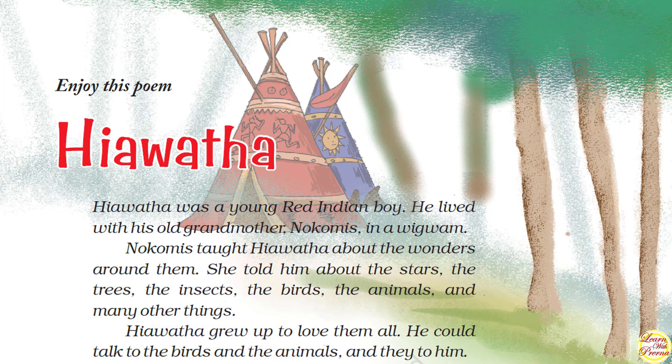As you can also see in this picture, some dome-shaped or conical-shaped tents are here which are made up of mats and bamboos — that is a wigwam. Nokomis taught Hiawatha about the wonders around them. She told him about the stars, the trees, the insects, the birds, the animals, and many other things — the beauty of nature. As time passed, Hiawatha grew up and loved all of them. He could also understand their language and used to talk with birds and animals.